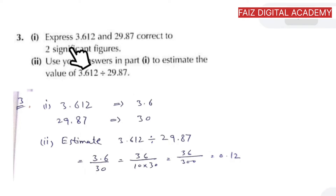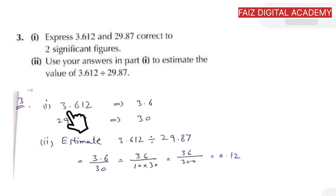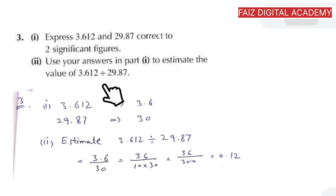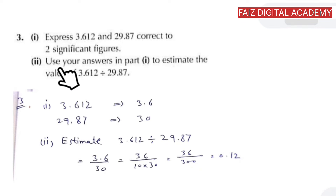In question number three, we have to express 3.612 and 29.87 correct to two significant figures. For 3.612, all digits are non-zero so all are significant; writing only two gives 3.6. For 29.87, the first two significant figures give 29, but since we remove the 8 we round up, making it 30.